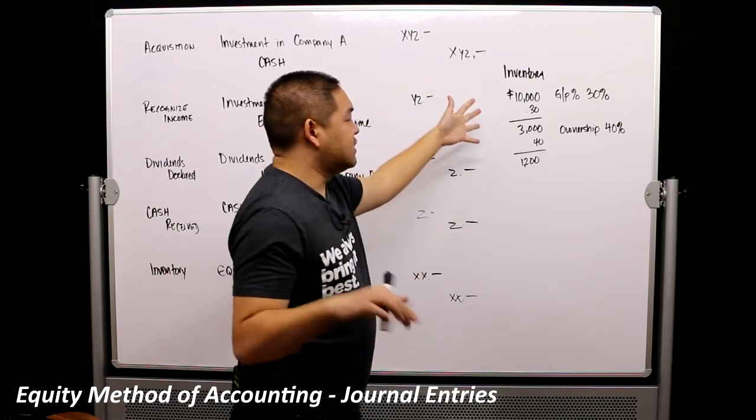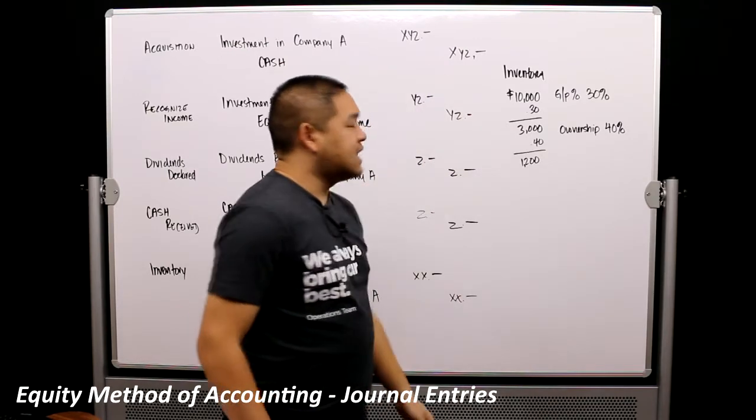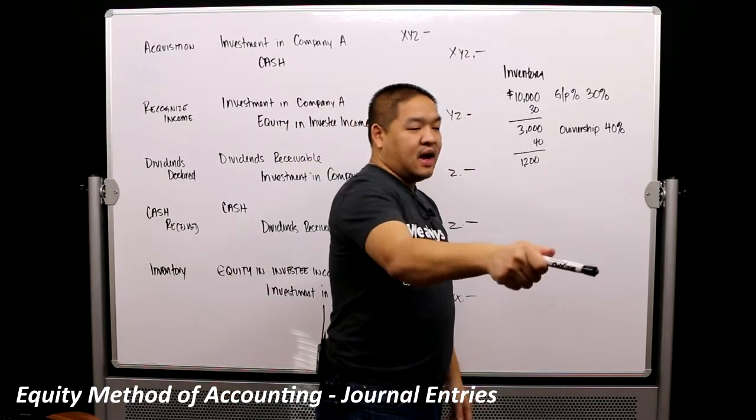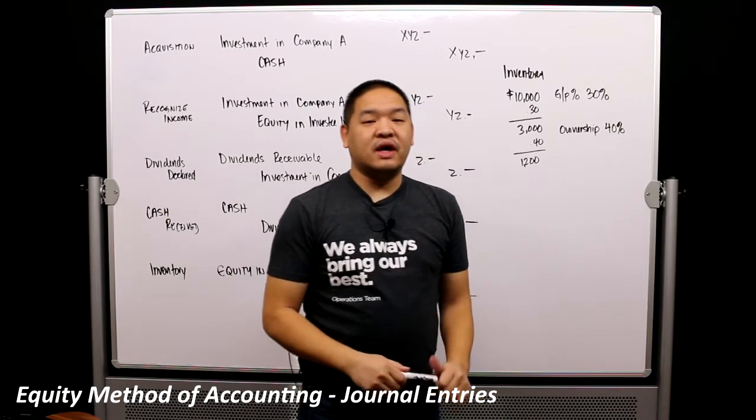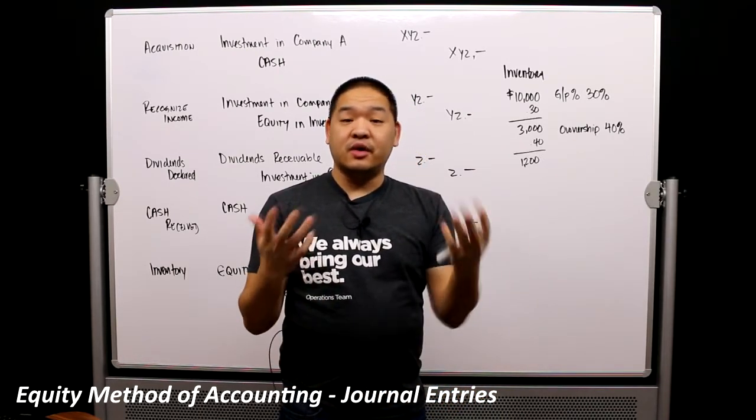And so in this case, simple example, the example goes fully in the book. But let's say I sell a company a $100,000 worth of inventory that they sell to someone else. So because I did that, I usually get a 30% profit.